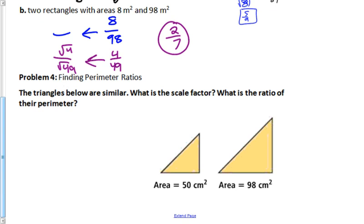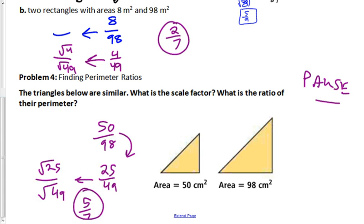Here's another example — given the areas, find the scale factor and perimeter ratio. Try this one on your own, pause the video, then unpause to see the answer. The scale factor is 5 over 7, and that's also the ratio of the perimeters.